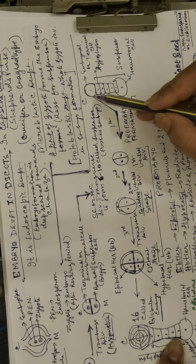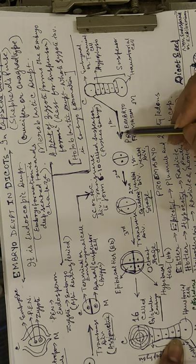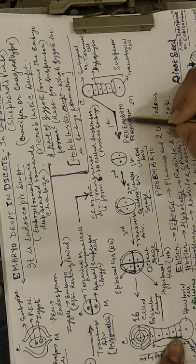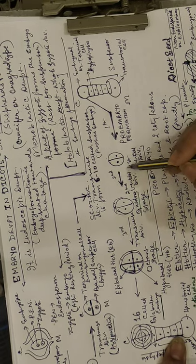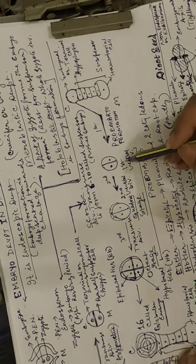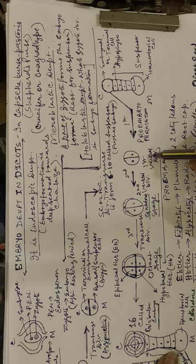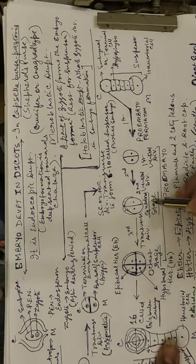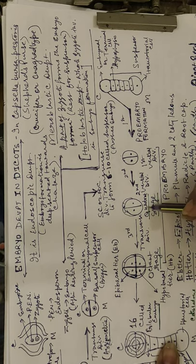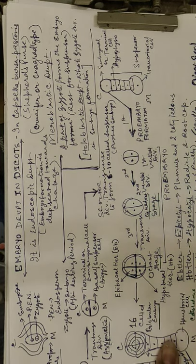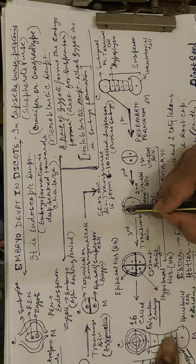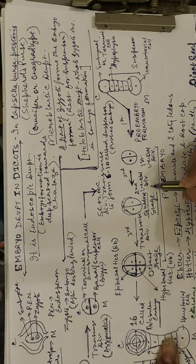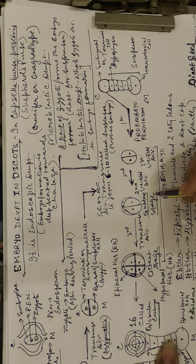From the embryonal or terminal cell, different divisions occur to form the pro-embryo. The first division is vertical to form a two-celled stage. The next division is also vertical — a second vertical division — resulting in four cells. Think of cutting an apple vertically twice: you get two in front and two behind. This four-celled stage is called the quadrant stage.